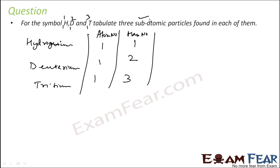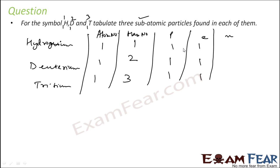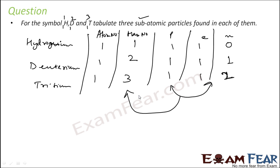We need to tabulate the subatomic particles: proton, electron, and neutron. The number of protons equals the atomic number, which is 1 for all three. Number of electrons equals number of protons since they are neutral, so also 1 each. Atomic mass equals protons plus neutrons. So for H: 1 = 1 + 0 (0 neutrons); for D: 2 = 1 + 1 (1 neutron); for T: 3 = 1 + 2 (2 neutrons).